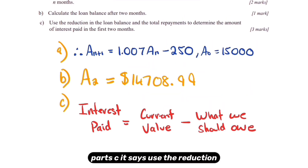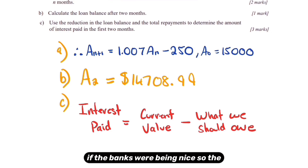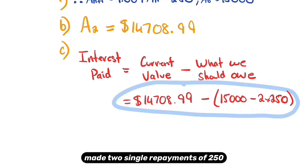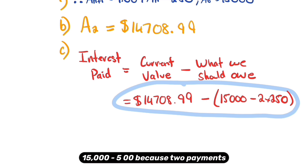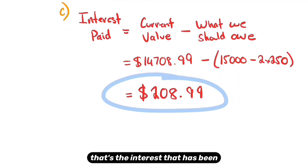For part C, use the reduction in loan balance and total repayments to determine interest paid in the first two months. Interest paid equals the current balance minus what we'd owe with no interest charged. Current value is A2, and what we should owe is 15,000 minus 500 (two repayments of $250). Plugging that into the calculator gives $208.99 — that's the interest paid in the first two months.